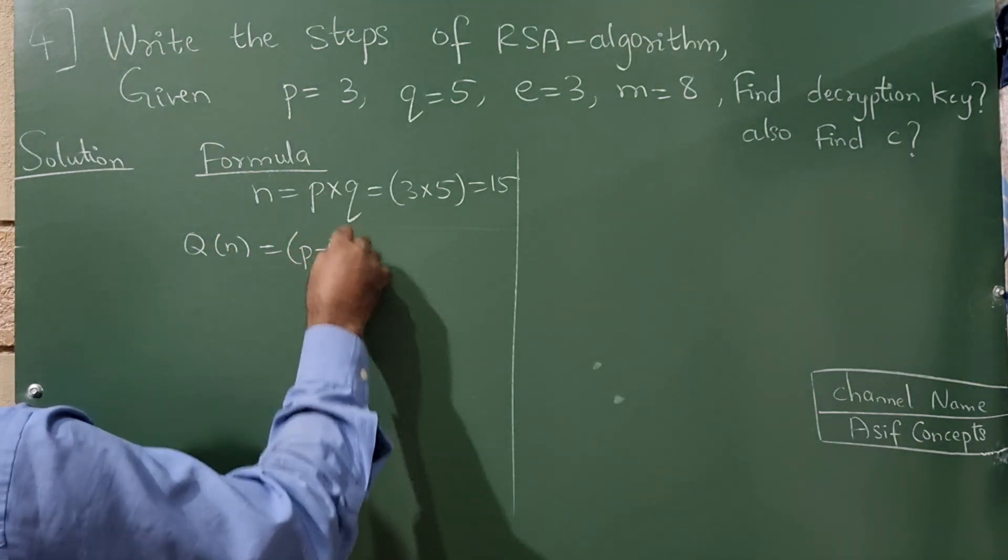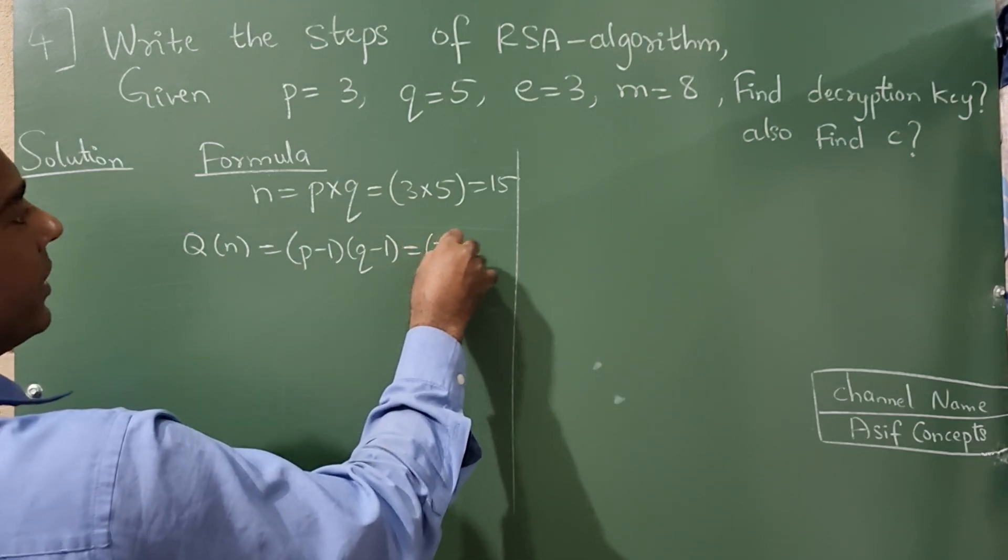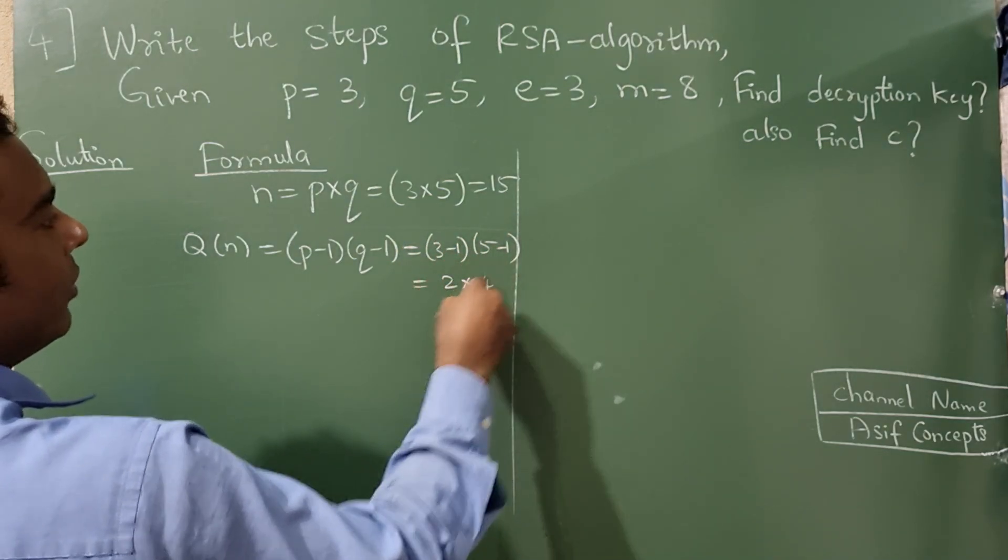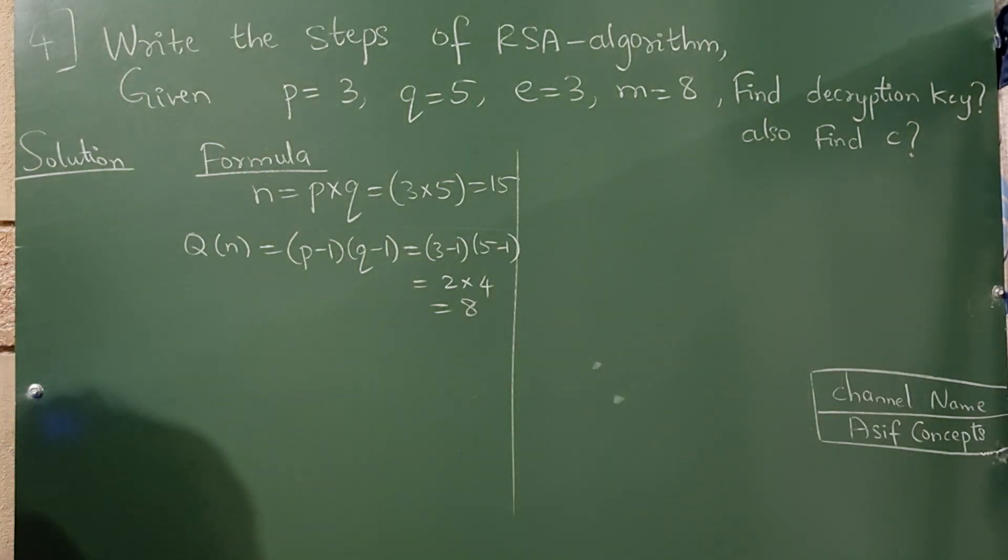So P minus 1, Q minus 1. So this will be 3 minus 1, 5 minus 1, 2 into 4. So it is 8.